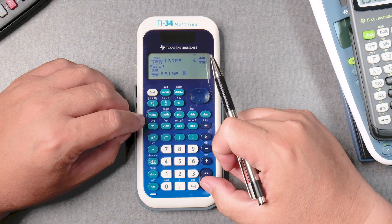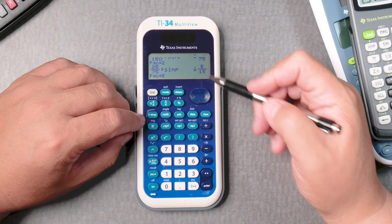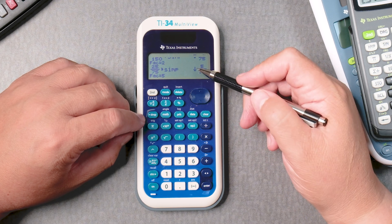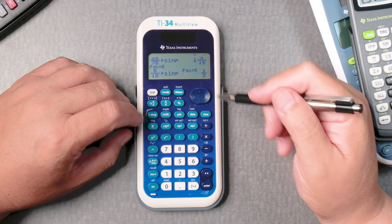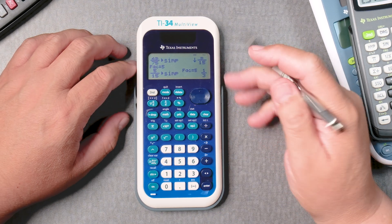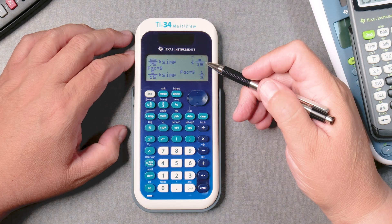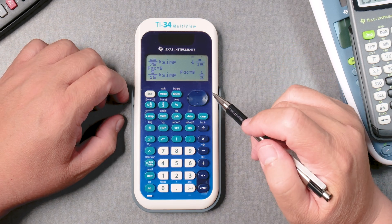Simplify, enter, 5 over 15. And there's an arrow still, meaning you can still simplify. Simplify, enter, 1 third. That's pretty neat. So it gives you the ability to reduce the fraction step by step.